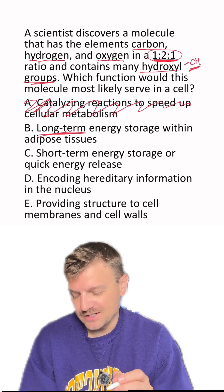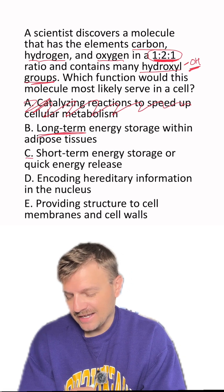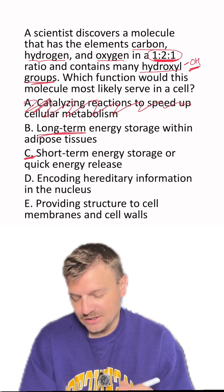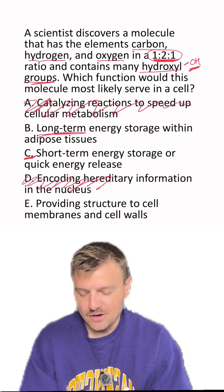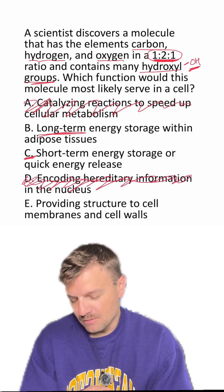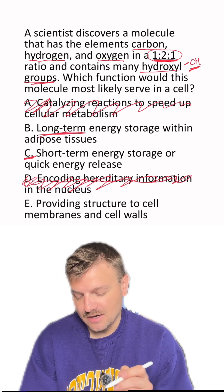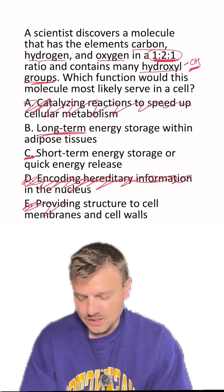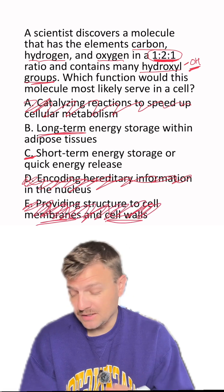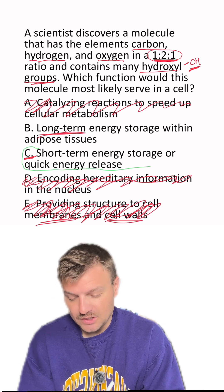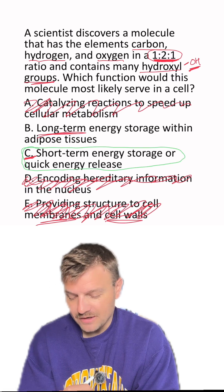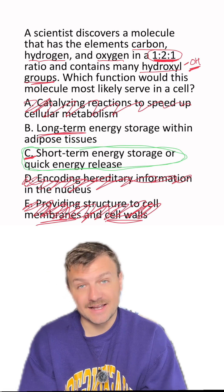Answer C: short-term energy storage and quick energy release. I like C so far, so I'm going to put a little line under it. Answer D: encoding hereditary information in the nucleus — that is nucleic acids, nope. Answer E: providing structure to the cell membranes and cell walls — that is also not what we're talking about. So we're between B and C, but I'm going to go with C since we talked about it before and I feel more confident. And yes, this is the right answer.